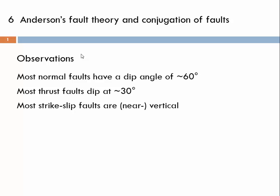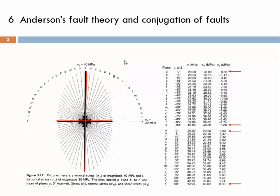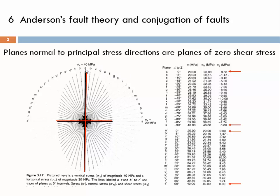So why is that so? Let's have a look at this diagram and these tables. When you look at specific planes — the vertical plane and the horizontal plane — in a stress field where the larger stress vector is vertical and the smallest is horizontal, you will observe that there is zero shear stress acting on these planes. Hence, planes normal to principal stress directions are planes of zero shear stress.